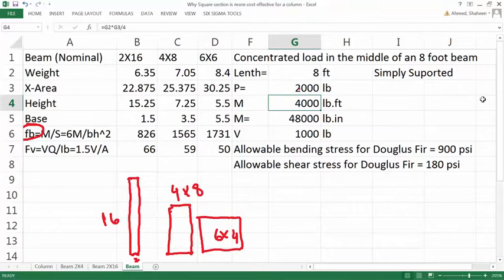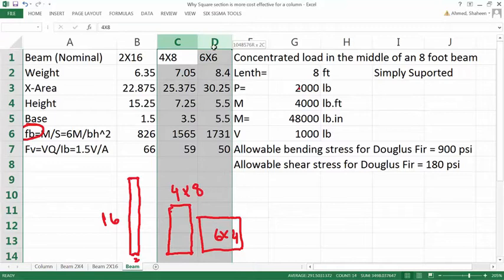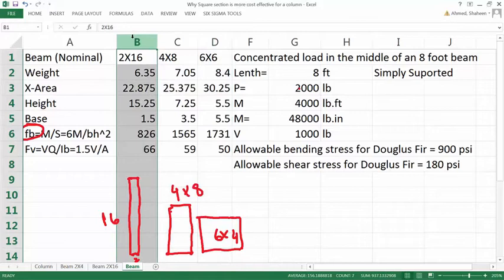For 2,000 pounds you can see how the stress changes. For 2x16 only 800 psi stress develops, and 4x8 and 6x6 develop more stress. Now if you design this using Douglas fir which can only take 900 psi, both 4x8 and 6x6 will fail as a beam. However, 2x16 will be okay.